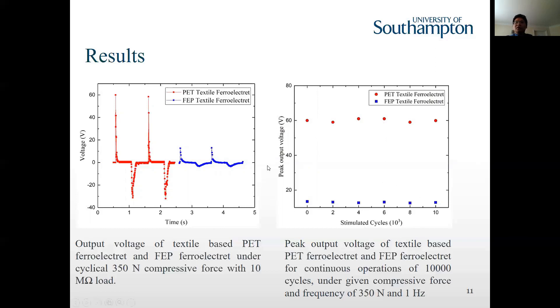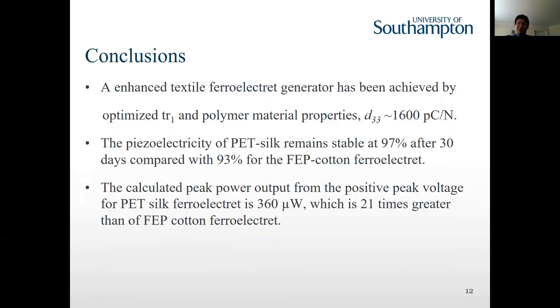In summary, enhanced energy harvesting performance is based on PET fabric. The piezoelectric property of the fabric textile ferroelectret is enhanced by optimized thickness ratio structure and better polymer material property. The stable piezoelectric coefficient d33 of the fabricated PET silk ferroelectret is achieved about 1600 picocoulomb per newton. Compared to the FEP textile ferroelectret, it performs better stability. Specifically, the calculated peak power output from the PET textile ferroelectret is 360 microwatts, which is about 21 times greater than the FEP textile ferroelectret.